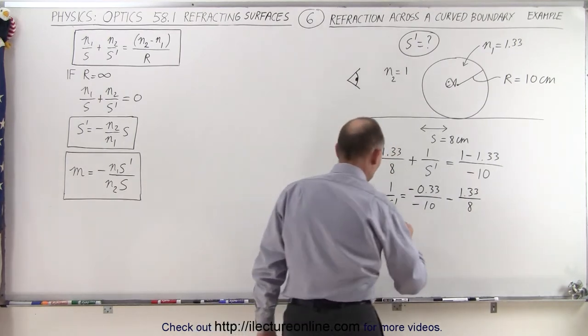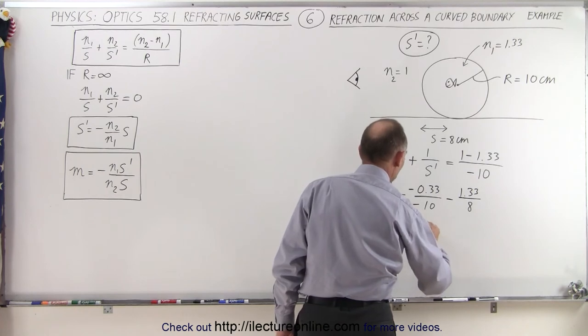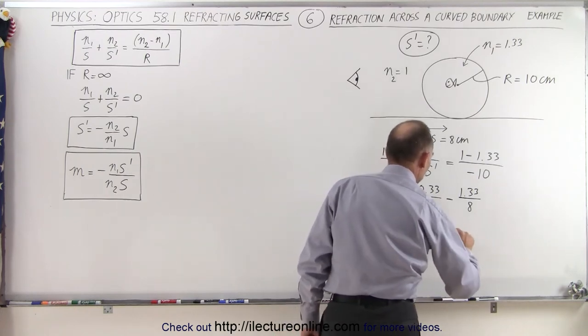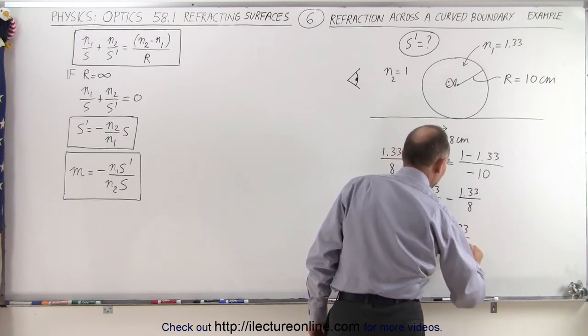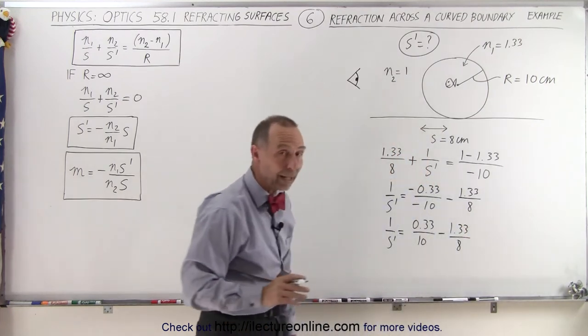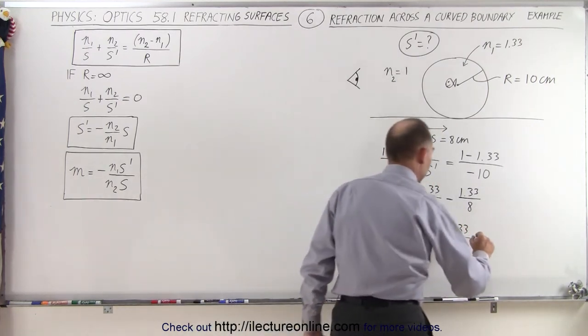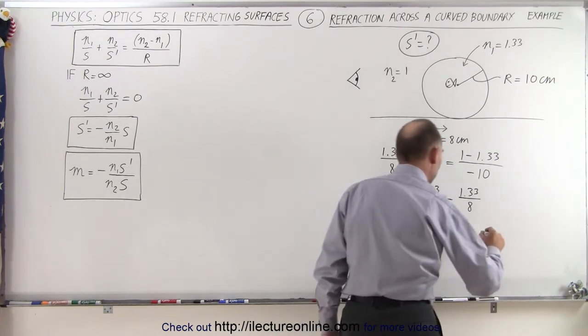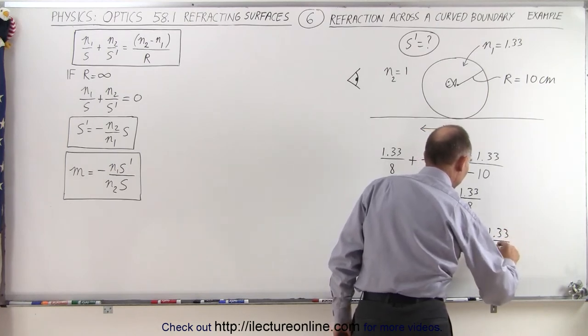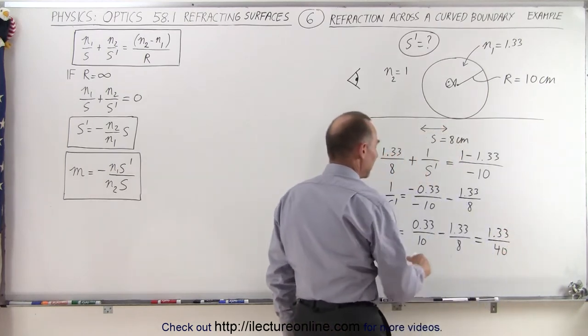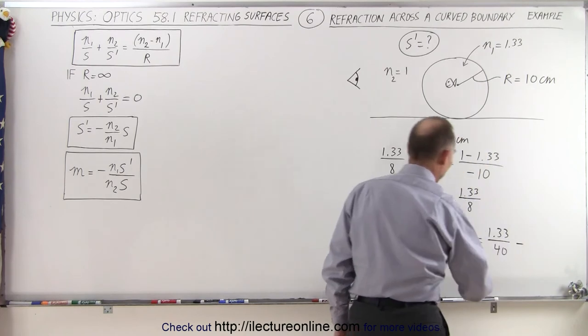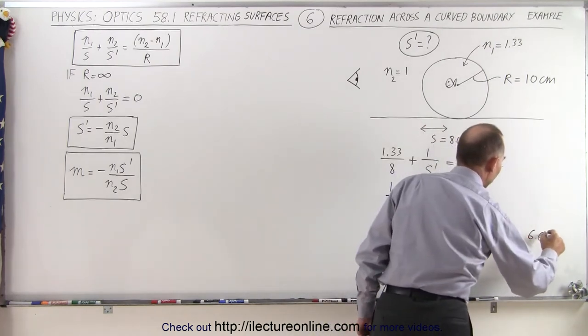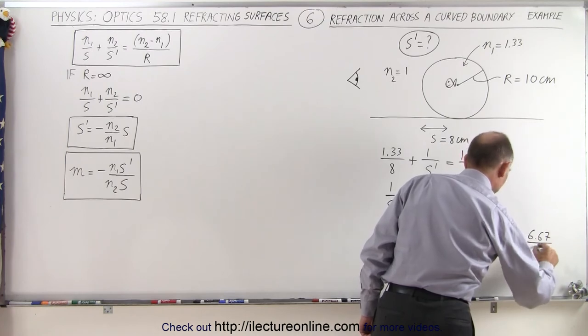Simplifying that a little bit more, we have 1 over S prime is equal to 0.33 divided by 10 minus 1.33 divided by 8. And a common denominator would be 40. So this becomes 4 times this. That would be 1.33 divided by 40, minus 5 times that. That would be 6.67 divided by 40.